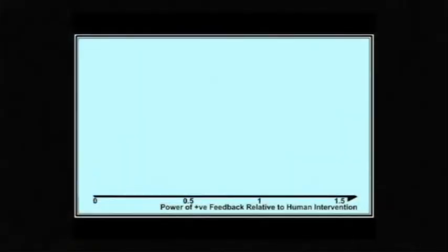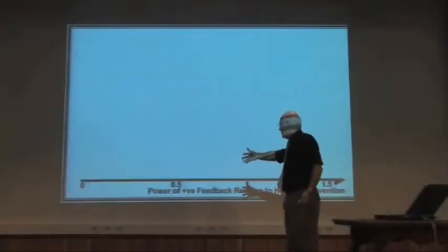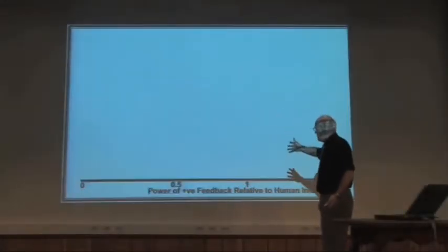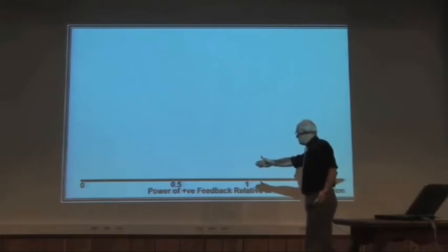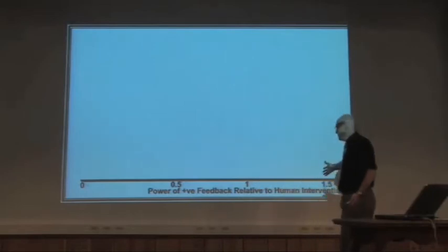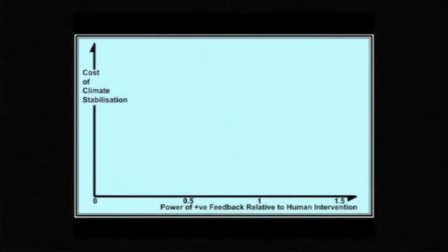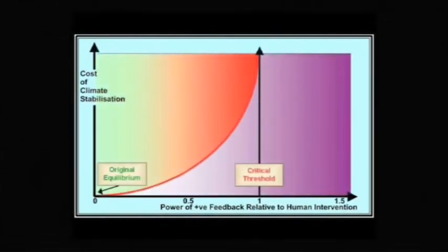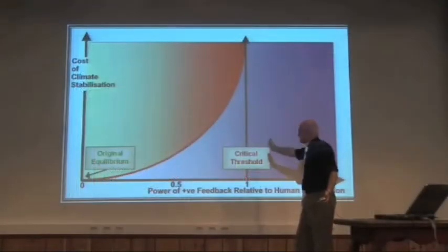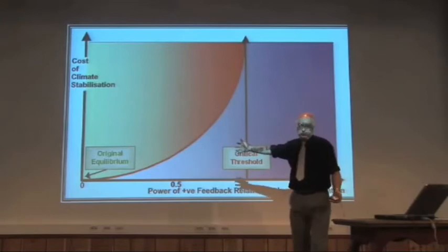Along the way, the bottom axis, the power of positive feedback relative to what we can do about it. So in the early stages, easy to restore the system to equilibrium. Feedback builds up, more difficult. Feedback reaches the critical threshold here. Just on the limit of everything we can do. Beyond that, nothing we can do. Costs up that axis. And this is what I mean by asymptotic increase as we reach the critical threshold. The costs escalate to infinity at that threshold.